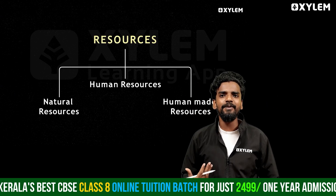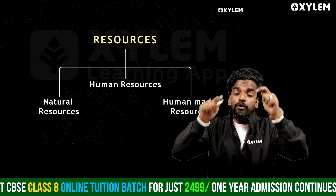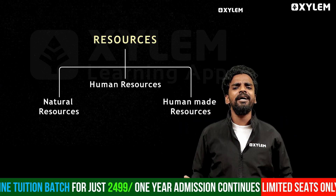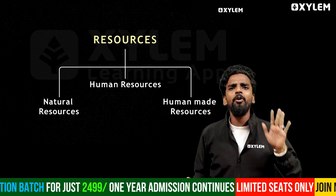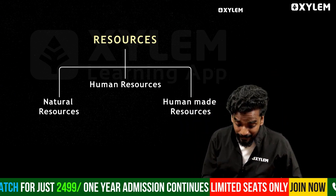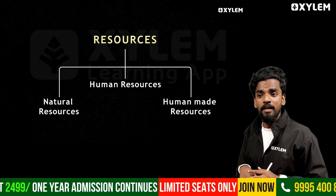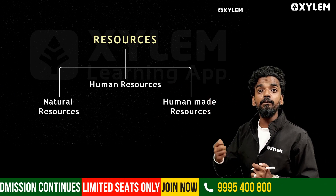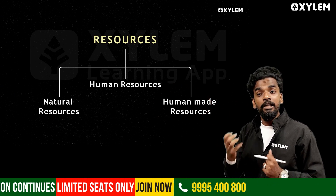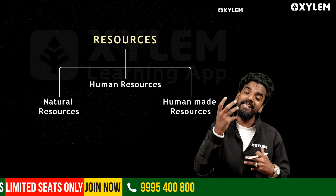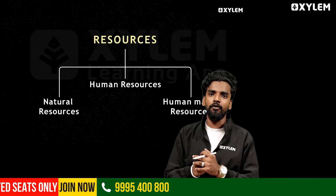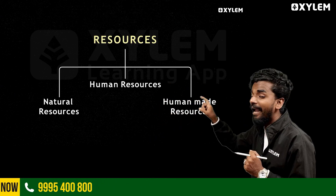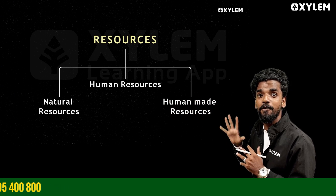Human resources — actually, I am a human resource. You are all human resources. The third one is human-made resources. For example, technology — new kinds of technology. The mobile phone is a new kind of technology that was created by humans. That is why it is called human-made resources.